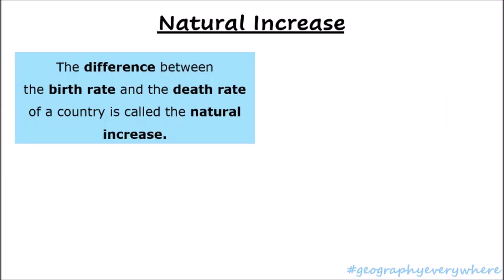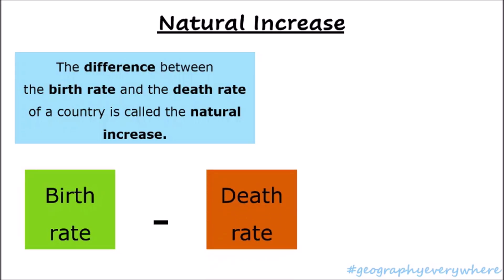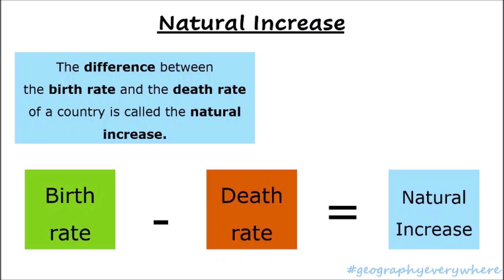Now we need to compare both birth rate and death rate. The natural increase allows us to do that. The natural increase is the difference between the birth rate and the death rate of a country. To work it out, you just need to take the birth rate minus the death rate, and this will leave you with a number which is the natural increase.